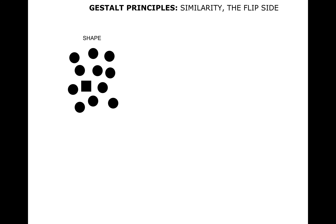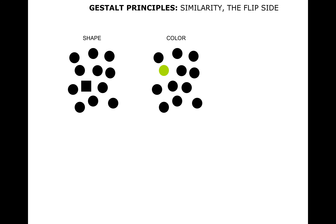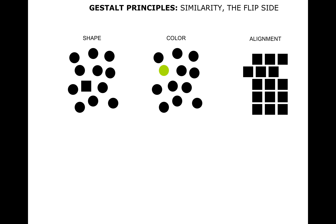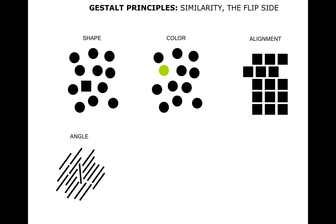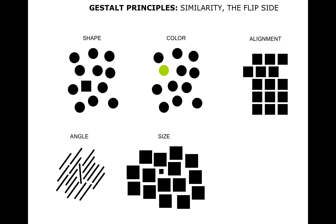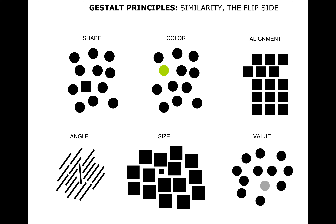There's also a flip side: dissimilarity. When we want to create a focal point, emphasis, or bring out something, we can make it dissimilar to the objects surrounding it. With the shapes, we notice the square immediately because it's dissimilar to all the circles around it. We can apply all of these physical characteristics to the flip side of similarity as well.